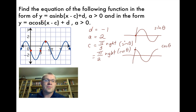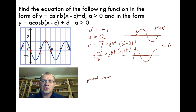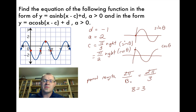Finally, we find b by looking at the period length. The period of this graph is 2π/3, and we know the formula for period length is 2π/b. So 2π/b = 2π/3, which means b = 3. You can pick any two corresponding points on the graph to measure the period; choosing a point at 0 makes it easy to see the new period is 2π/3.